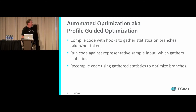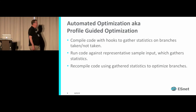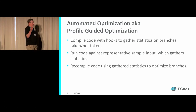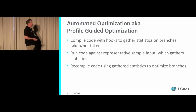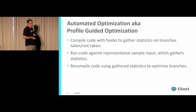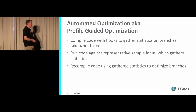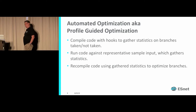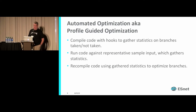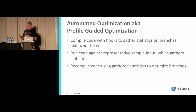Automated optimization, a.k.a. profile-guided optimization, is used on all modern compilers. You compile the code with instrumentation hooks that gather statistics on branches taken or not taken. You run it against sample input to gather those statistics, then the code is recompiled using those statistics to optimize the branches.